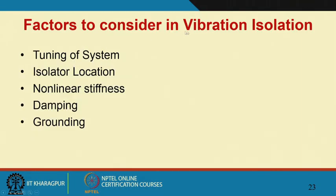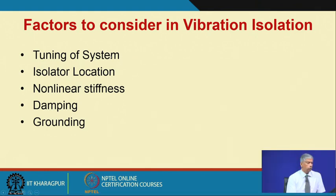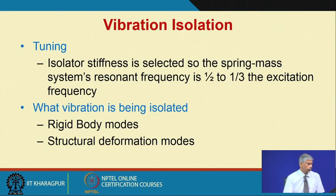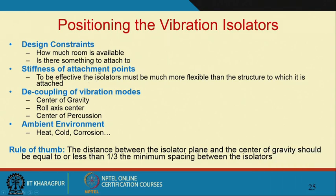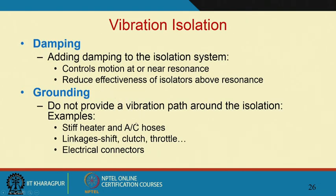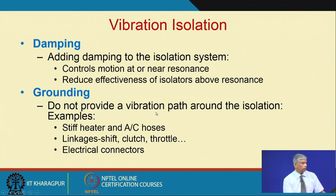Factors to consider in vibration isolation include tuning of the system, isolated location, non-linear stiffness, damping, and grounding. Remember that in vibration isolation we need to find the natural frequency such that the frequency ratio r is greater than root 2, so that the transmitted force is less than the applied force. When positioning vibration isolators, there should be no short-circuiting — a metal-to-metal contact must not happen even if you have done a good isolation.